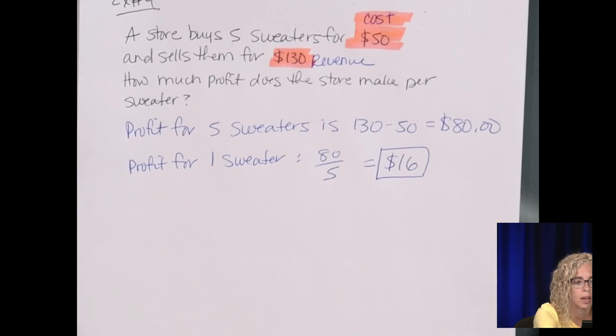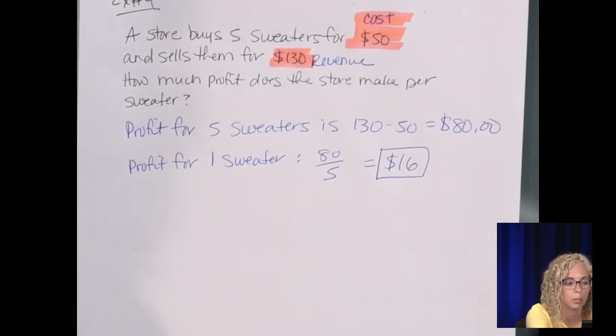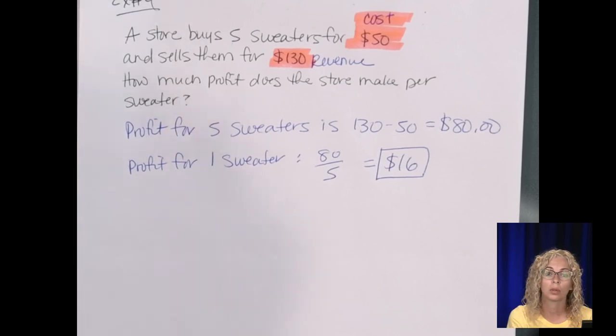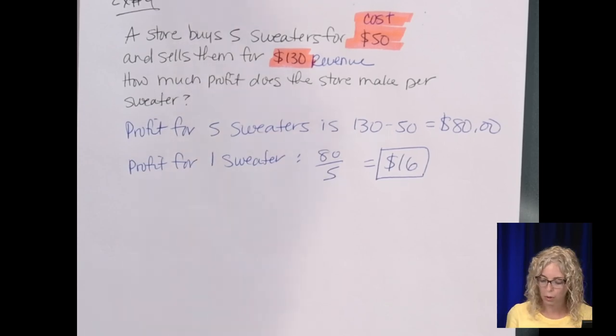So the next section in Delta Math involves matching a table correctly to a scenario or context. You can look at the tables and see which one matches up. And same with matching a graph to a table or an equation. You can simply just check the table to see which points are on the graph and check the equation to see if that matches up. So the next two sections are fairly easy, and then we'll look at another word problem.